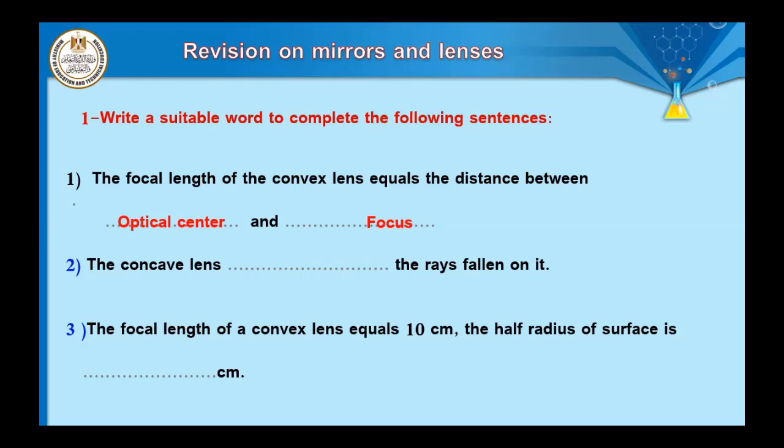Question number two: the concave lens ___ rays falling on it. Lenses are classified into two types: concave and convex. The convex lens is called a collective lens, as it collects light after falling on it. The concave lens is called a diverging lens — it diverges, meaning it scatters all rays in many directions. So the concave lens diverges the rays falling on it.